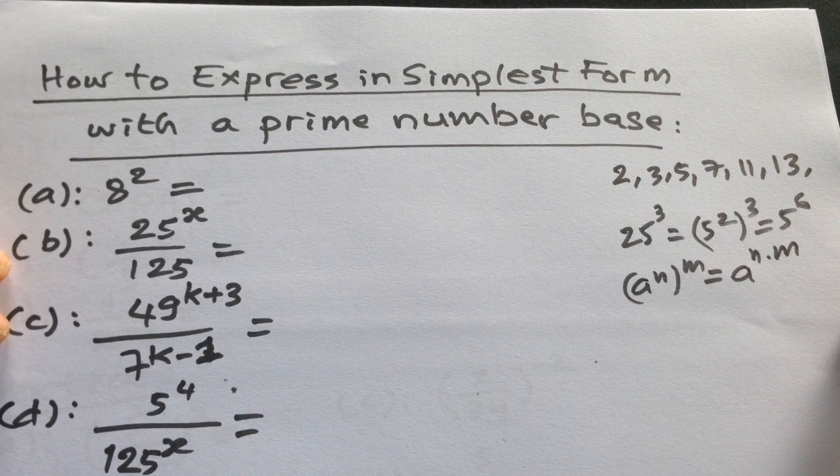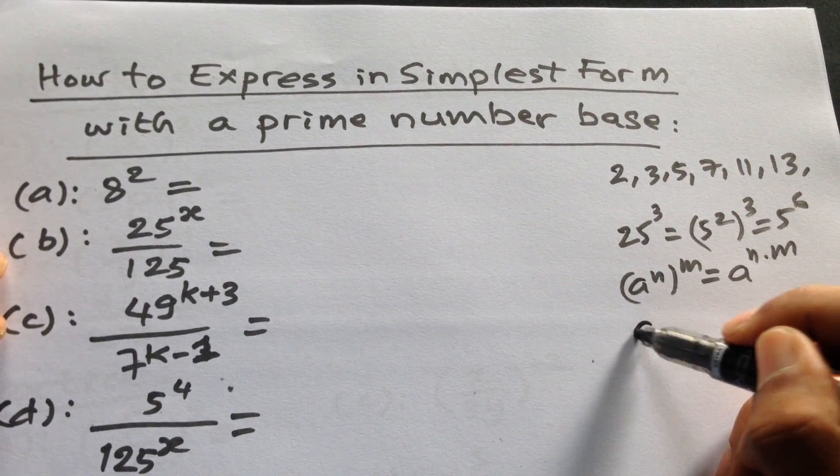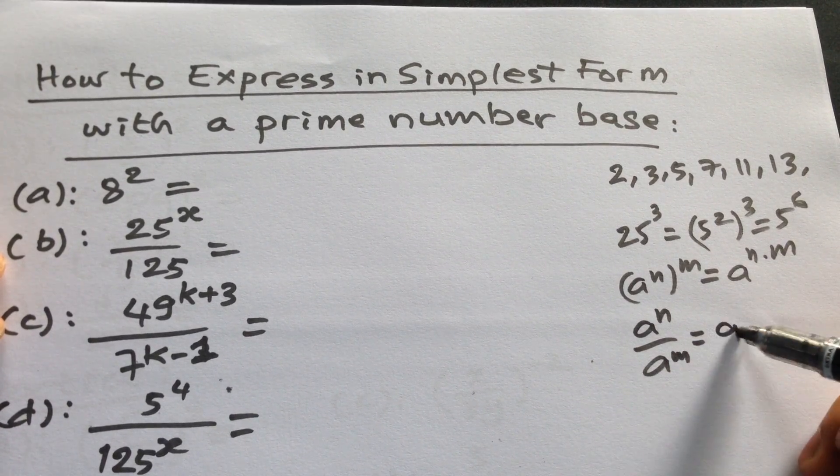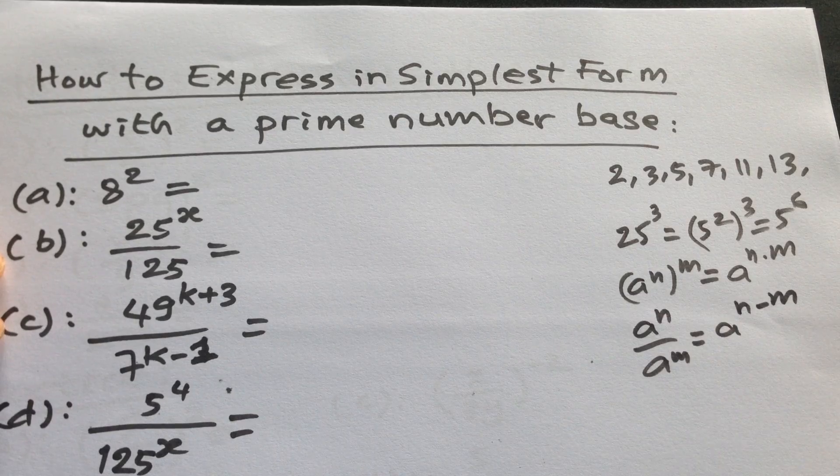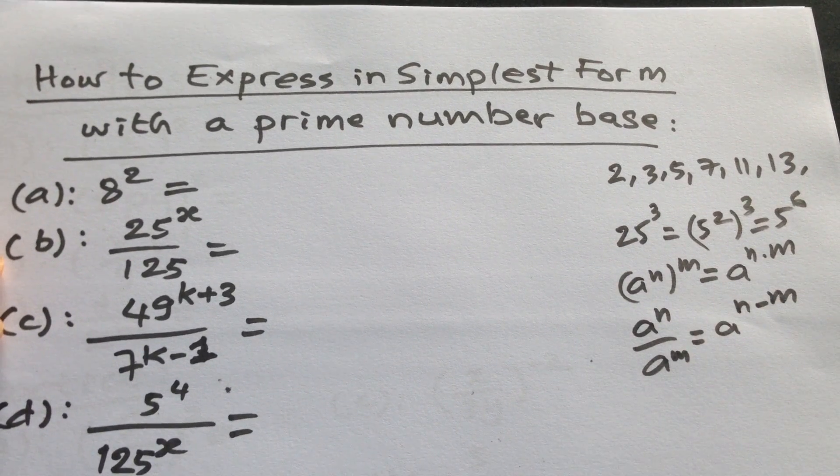Now we use the formula: a to the power n divided by a to the power m equals a to the power n minus m. So we have both formulas.